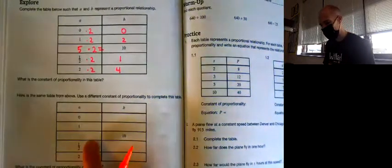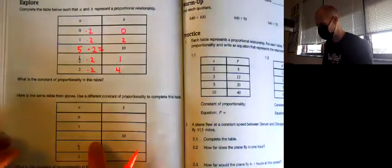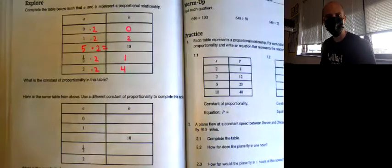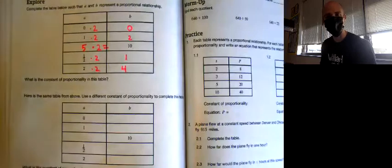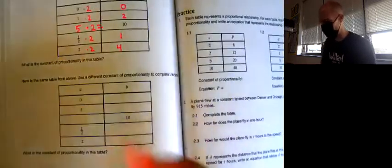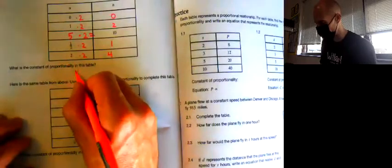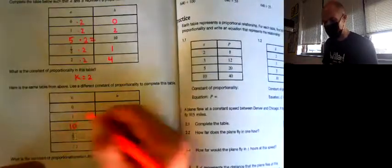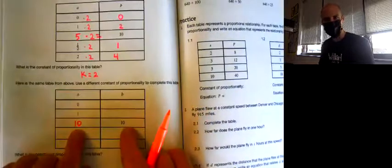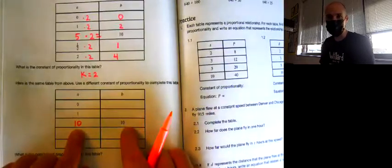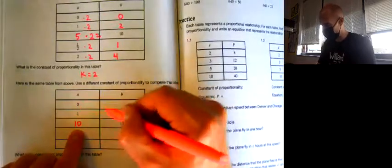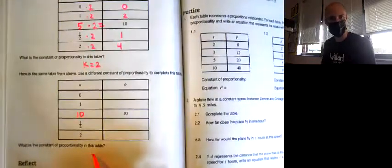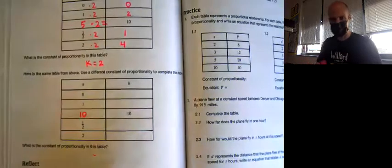Here's the same table from above. Use a different constant of proportionality to complete this table. I'm going to set this up so that it's relatively easy for you and then I'm going to ask you to finish it. What is the constant of proportionality in this table? K equals two here. I'm going to set this up relatively easy for you and let you figure out the end. I want you to put a 10 in this A box here. That should make it pretty obvious what this constant of proportionality is going to be, the easiest one you could have. And then I want you to multiply all these values by that constant of proportionality and write it here where it says what is your constant, that's it.